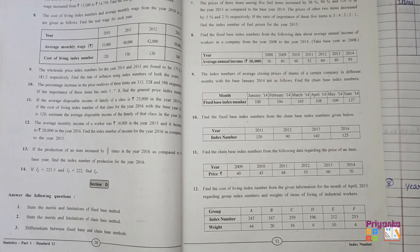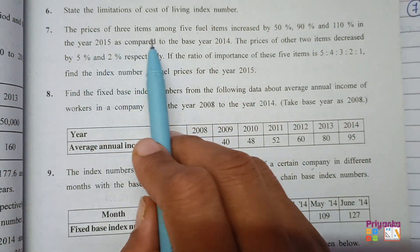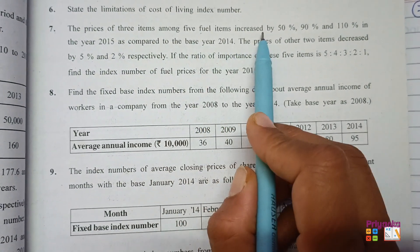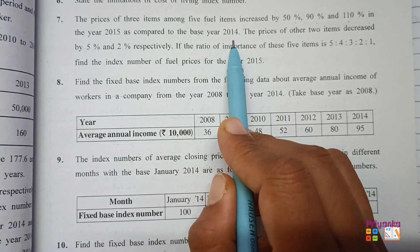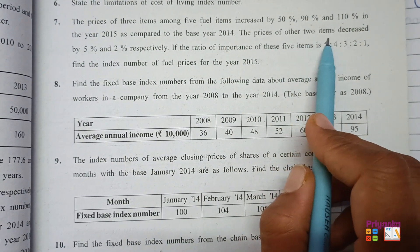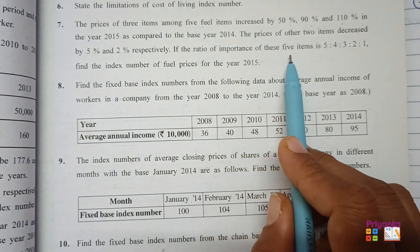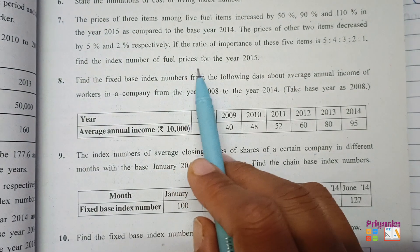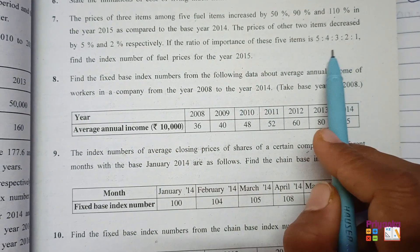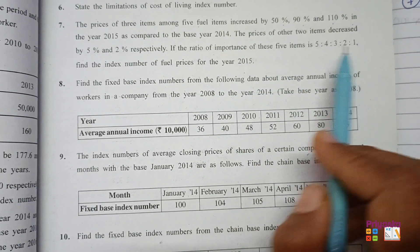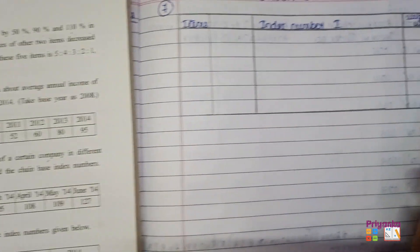Section D starts from page number 50, but it's all theory. We'll start the calculation from question number 7. The price of three items among five fuel items increased by 50%, 90%, and 110% in the year 2015 as compared to the base year 2014. The price of the other two items decreased by 5% and 2% respectively. The ratio of importance of these five items is 5:4:3:2:1. Find the index number of fuel price for the year 2015. Just prepare the table.